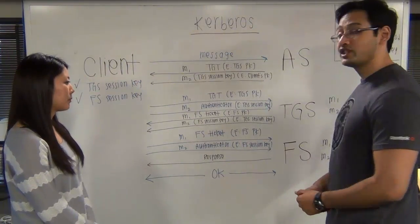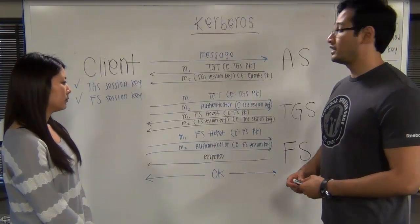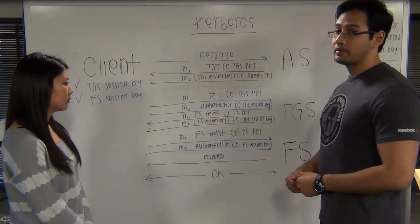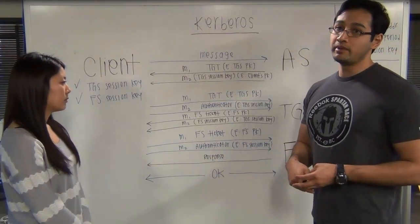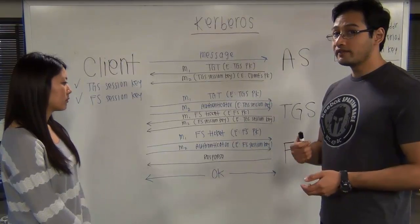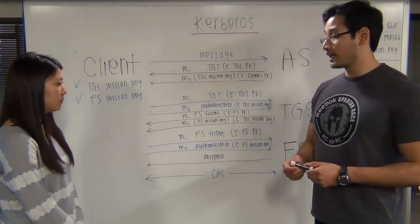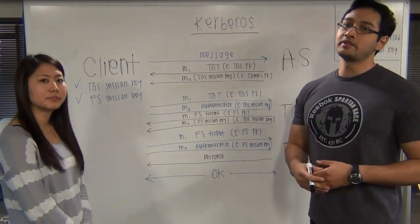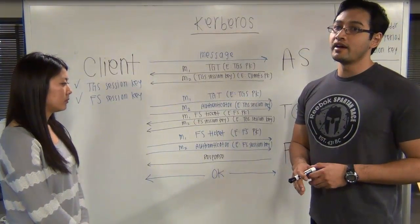The file server will receive both messages from the client. It will decrypt the file server ticket using its private key, and once decrypted, it will get the client ID, client network address, ticket validity period, and the file server session key. Using the file server session key, it will decrypt the authenticator and get the client ID and timestamp. It will check both the client ID and timestamp to make sure they match and don't exceed the ticket validity period.